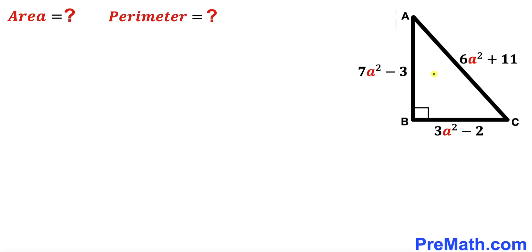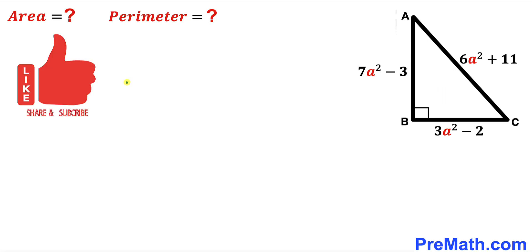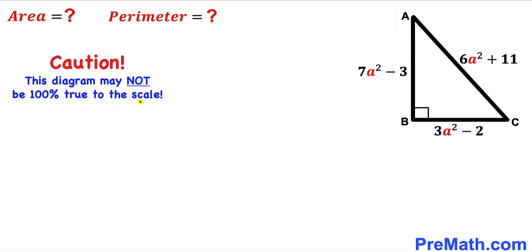Welcome to Pre-Math. In this video we have this right triangle ABC, as you can see in the given diagram, such that its hypotenuse is 6a² + 11, whereas its two other legs are 3a² − 2 and 7a² − 3. Our task is to calculate the area and the perimeter of this right triangle. Please don't forget to give a thumbs up and subscribe, and keep in mind that this figure may not be 100% true to scale.